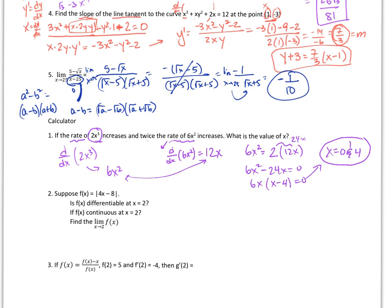Number two says suppose f of x equals the absolute value of 4x minus 8. Is f of x differentiable at x equals 2? If you graph this, you'll see a kink at x equals 2, so it is not differentiable there. But is it continuous at x equals 2? Yes — you can trace the whole graph without picking up your pencil. What's the limit as x goes to 2? Checking from the right and left, they both match, so the limit is 0.